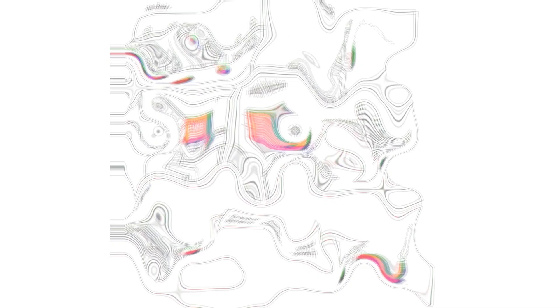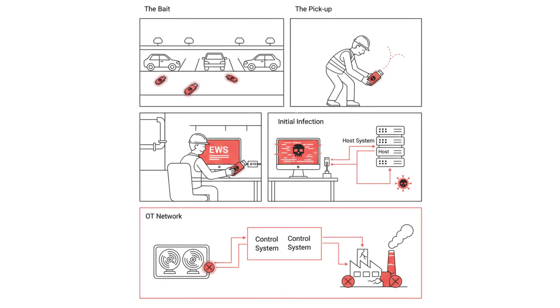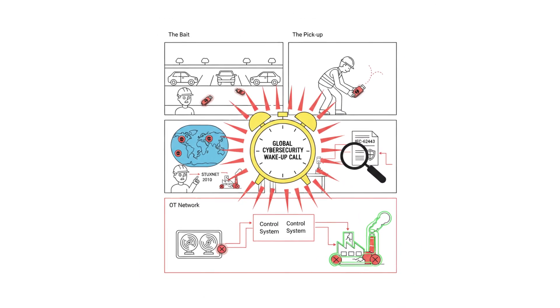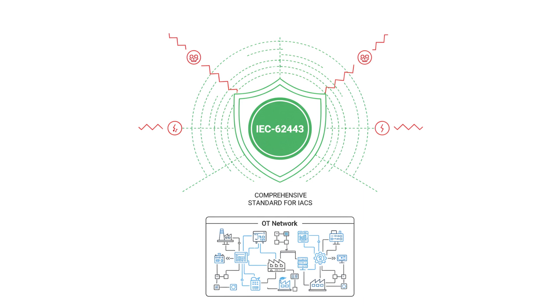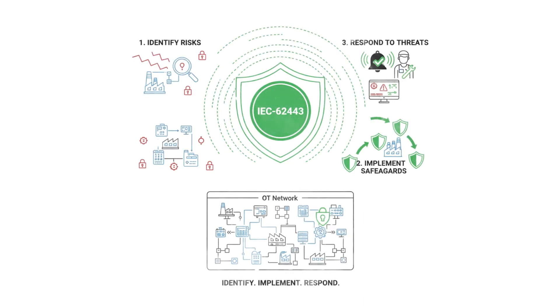For example, in 2010, the Stuxnet worm targeted Iran's nuclear facilities, causing physical damage to centrifuges. This was a wake-up call for the world. Enter IEC 62443 — a comprehensive standard designed specifically for industrial automation and control systems (IACS). It provides a structured approach to identify risks, implement safeguards, and respond to threats. But here's the kicker: not all parts of this standard apply to everyone.